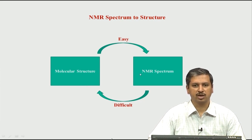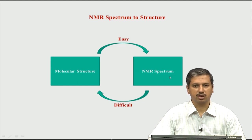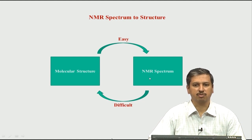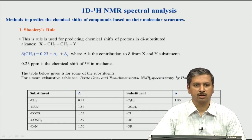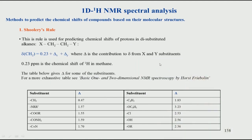Our focus in this part of the course will be to look at simple 1D small molecules with 1D spectrum — mainly proton spectrum in the next few classes — but we will also include carbon spectrum as we go to the next part. Let us look at what determines the chemical shifts of a molecule. There are a few rules — this is not an exhaustive list. There is a very nice book by Fibrolin, 1D and 2D NMR, from which this content has been taken; if you go through that book you will see many more rules for predicting chemical shifts.